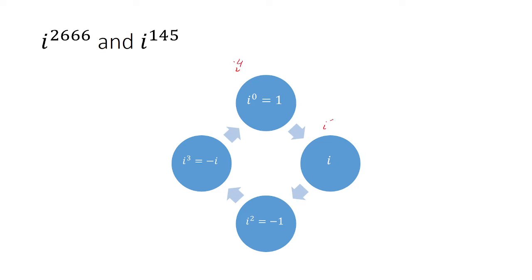which is 1. And then i to the 5th is equal to i, i to the 6th is equal to i squared, which is negative 1, i to the 7th is the same thing as negative i, and then i to the 8th is 1, etc.